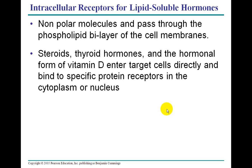Non-polar molecules can pass right through the phospholipid bilayer cell membranes. Some of these are steroids, the thyroid hormones, and the hormonal form of vitamin D. They enter the cells directly and bind to specific protein receptors either in the cytoplasm or in the nucleus.